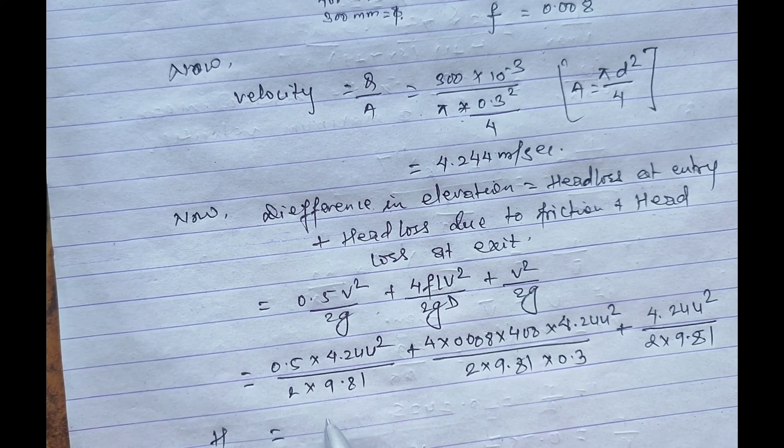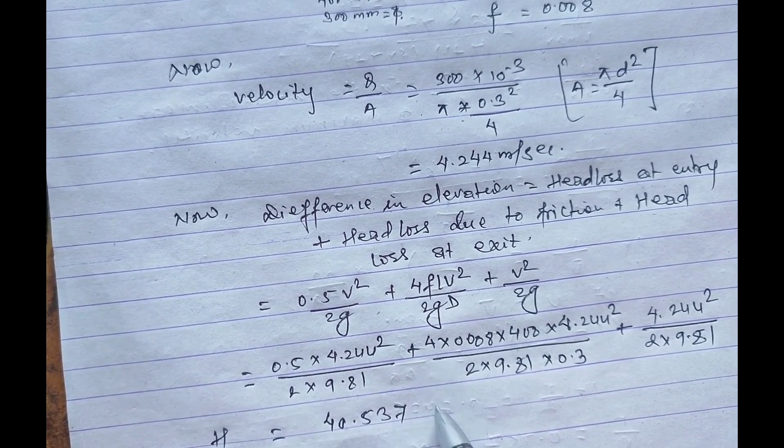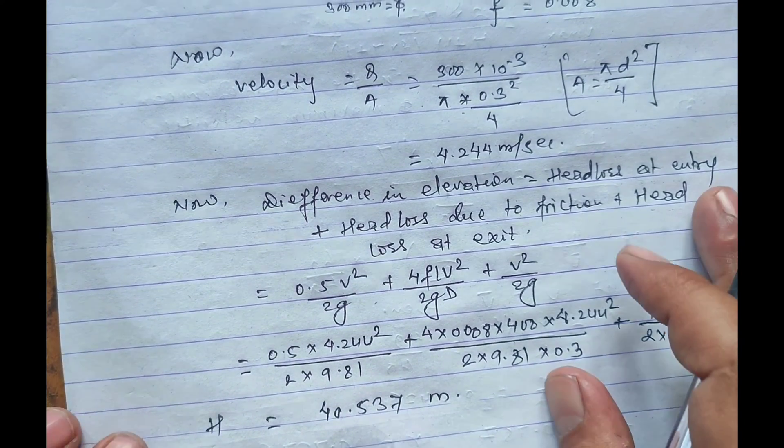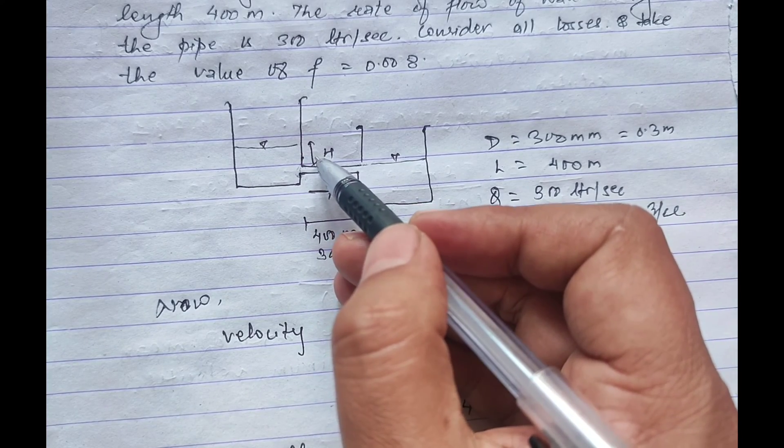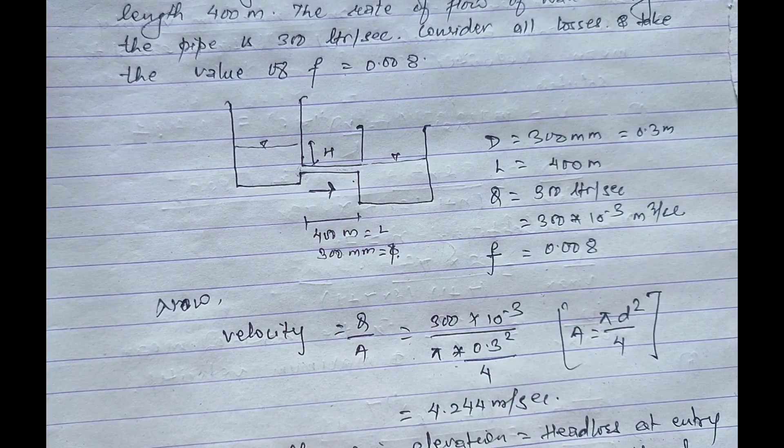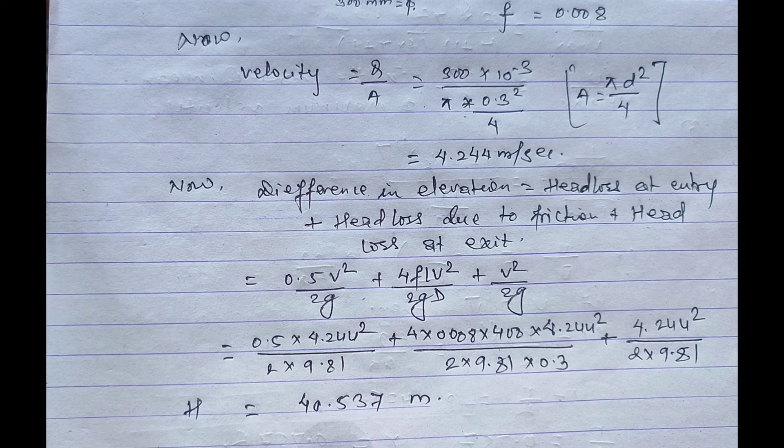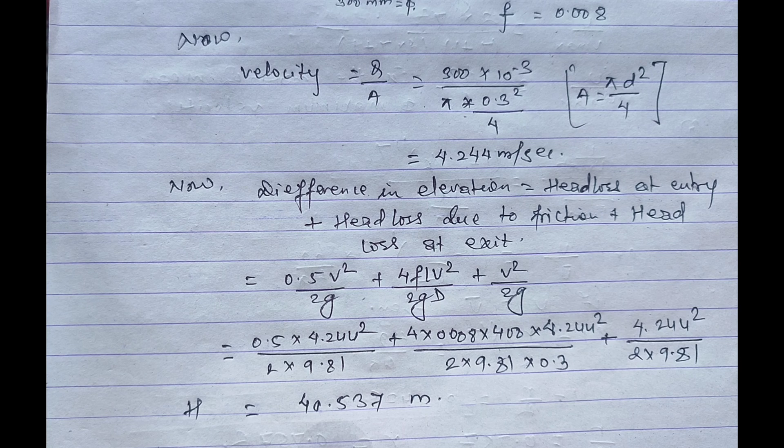Difference in head h is equal to 40.537 meter, which is the required difference in elevation. So for this time we end the video. We'll come again with one new video. Till then keep on watching our channel and don't forget to subscribe. If you have any question related to any fluid subject, please consult with us. Thank you.